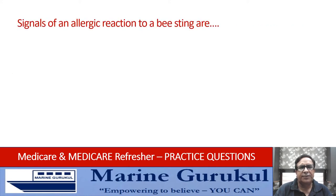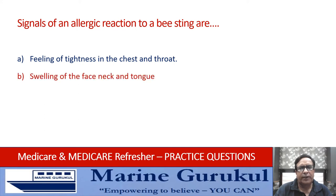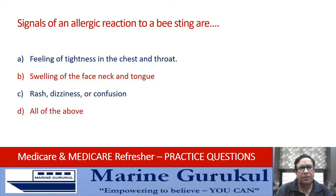Signals of allergic reaction to a bee sting are: feeling of tightness in the chest and throat; swelling of the face, neck, and tongue; rash, dizziness, or confusion; or all of the above? The answer is all of the above — all of these are symptoms of allergic reaction due to a bee sting.